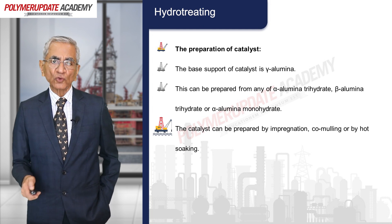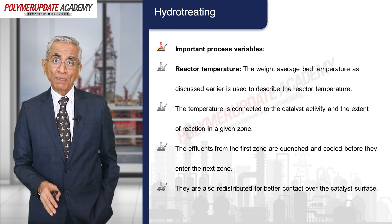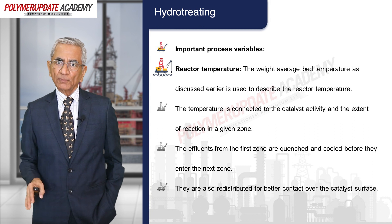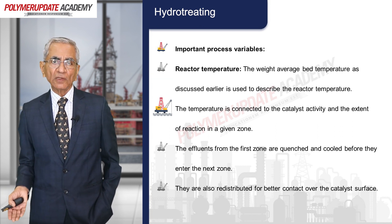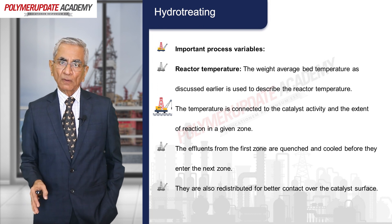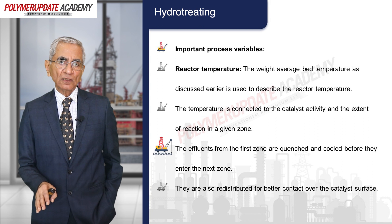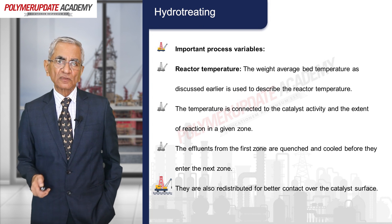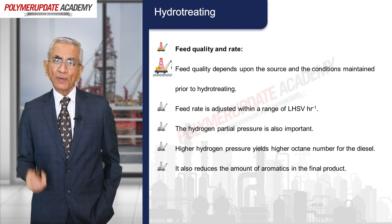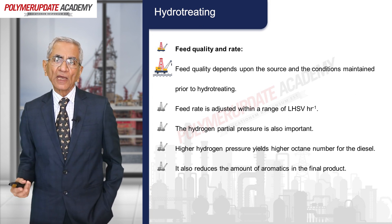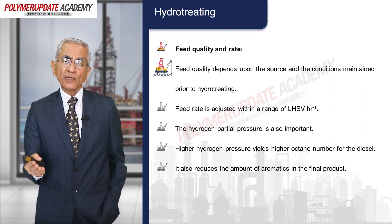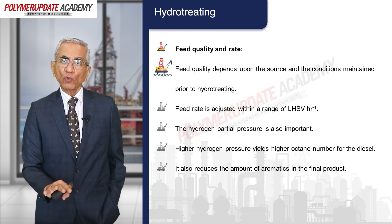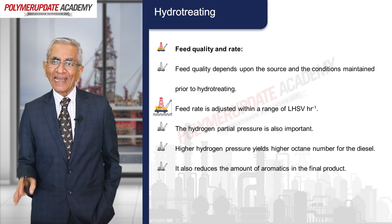Important process variables include reactor temperature — the weight average bed temperature is used to describe reactor temperature, connected to catalyst activity and the extent of reaction in a given zone. Effluents from one zone are quenched and cooled before entering the next zone and redistributed for better contact over the catalyst surface. Feed quality depends upon the source and conditions maintained prior to hydrotreating — whether it is naphtha, visbreaker product, or resid. Feed rate is adjusted within a range of LHSV (liquid hourly space velocity) per hour.